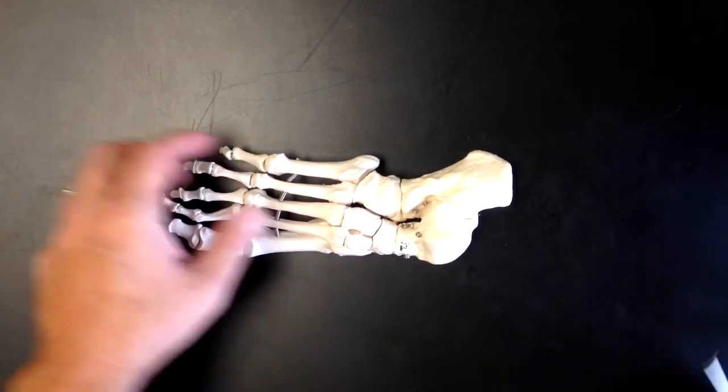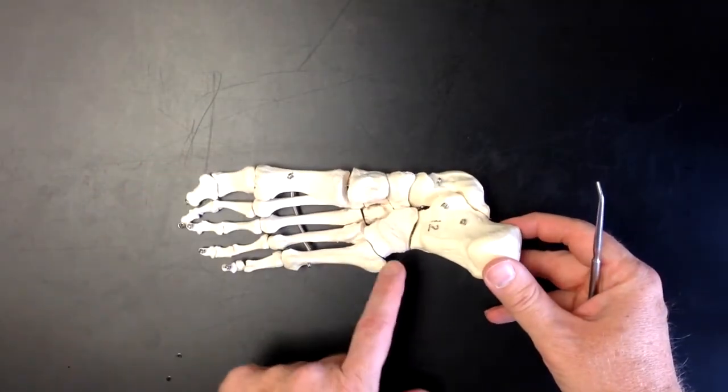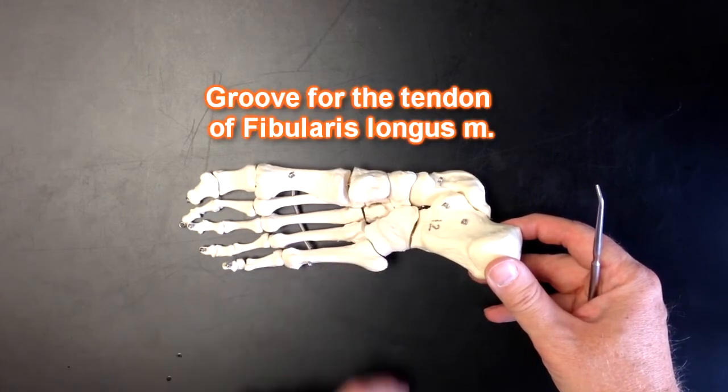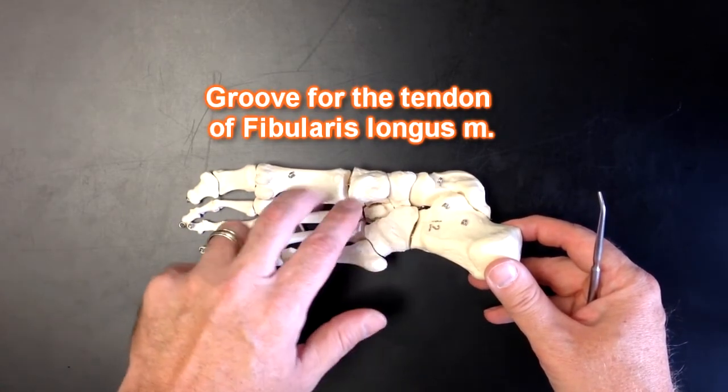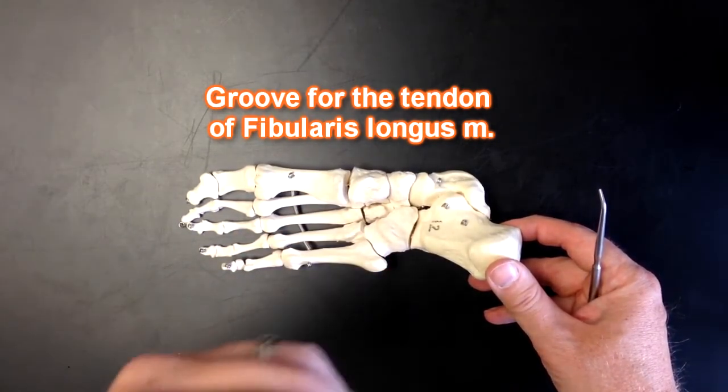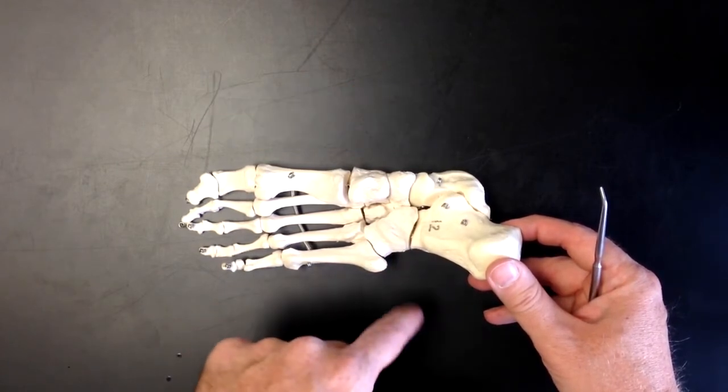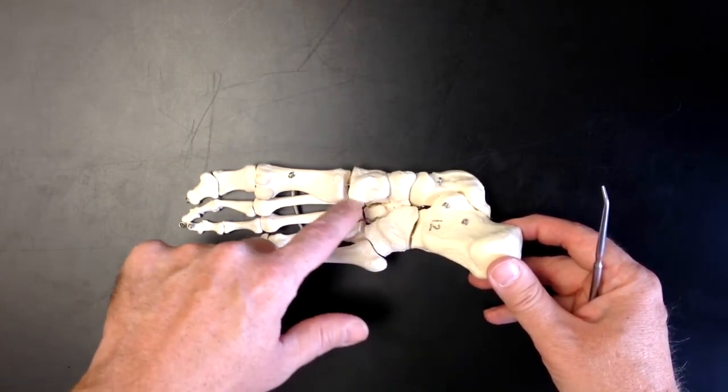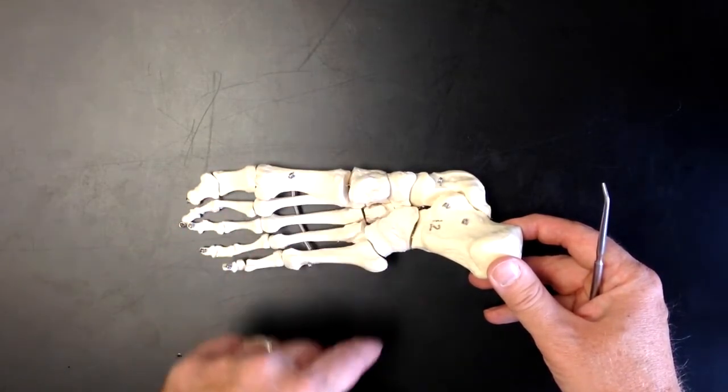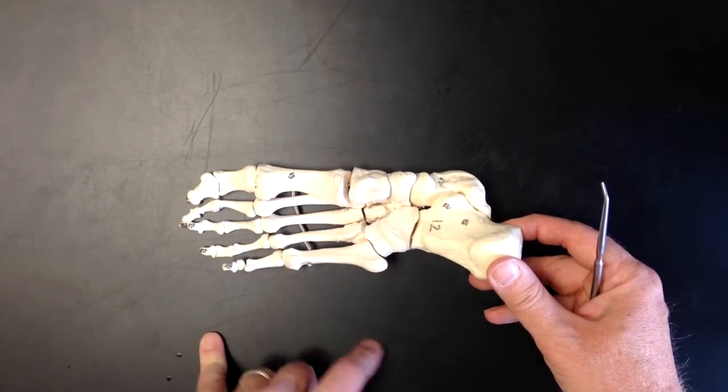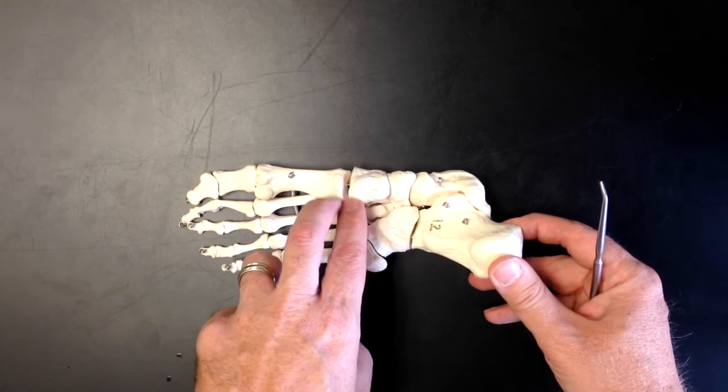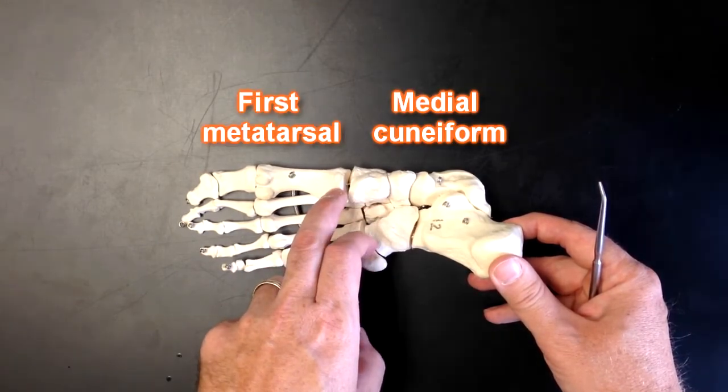There's an interesting structure underneath this cuboid bone and that's this structure right here. This groove right here is the groove for the tendon of the fibularis longus muscle. That fibularis longus muscle runs down the fibula behind the lateral malleolus and then across the foot like this. So it kind of forms a stirrup underneath the foot. It's going to insert onto these two bones right here, the medial cuneiform and the first metatarsal.